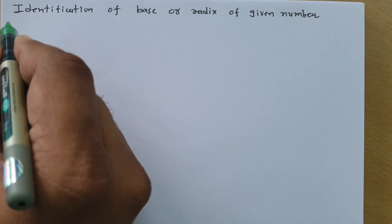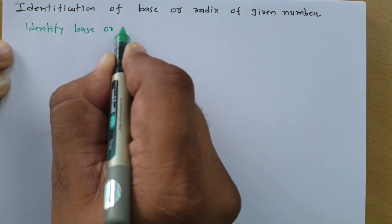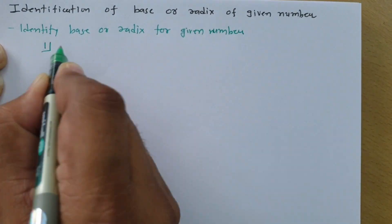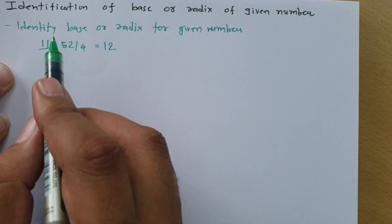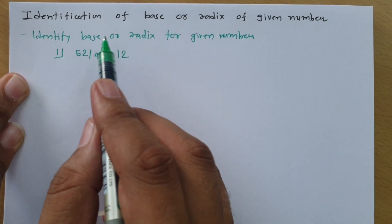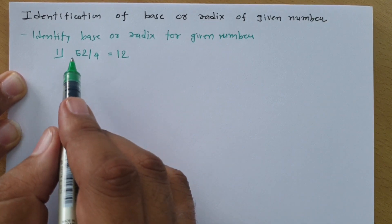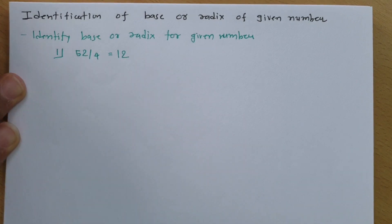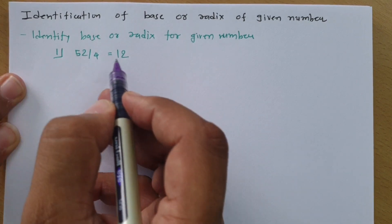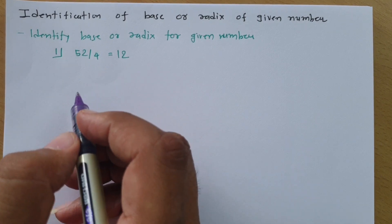The equation given is 52 divided by 4, and that equals 12. The question is: in which number system does this hold true? We need to identify the base or radix for this given equation.